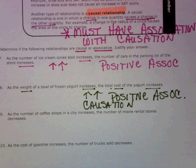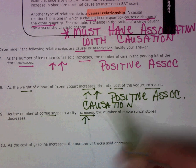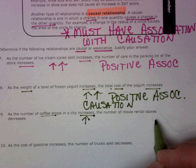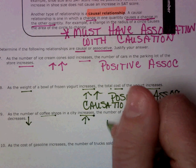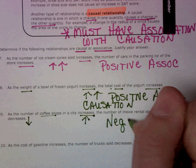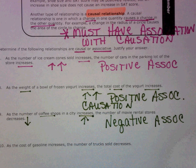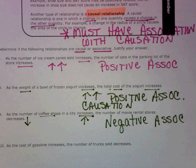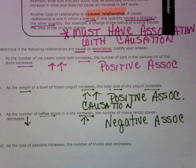Okay, the next one. As the number of coffee shops increases, the number of movie rental stores decreases. So one is going up and the other is going down, which means that is a negative association. But does coffee shops going up cause the number of movie rental stores to go down? No. They have no relationship in terms of one causing the other. So that would be a negative association.